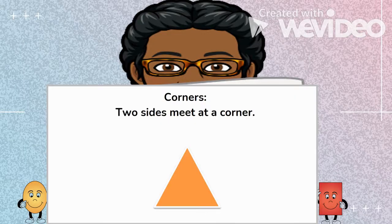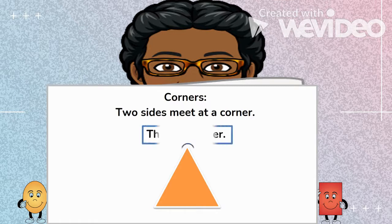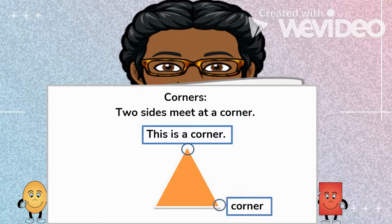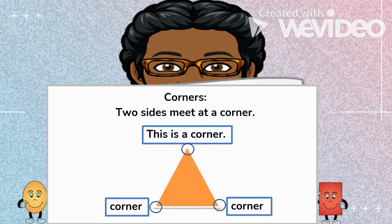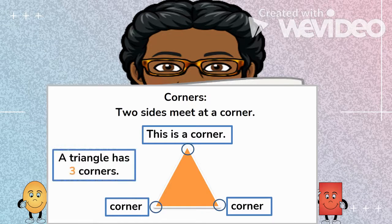These are corners. Two sides meet at a corner. This is a corner. This is a corner. This is a corner. And this is a corner. A triangle has three corners.